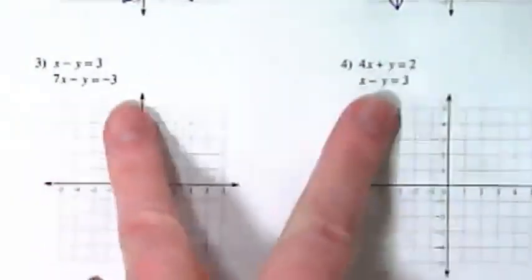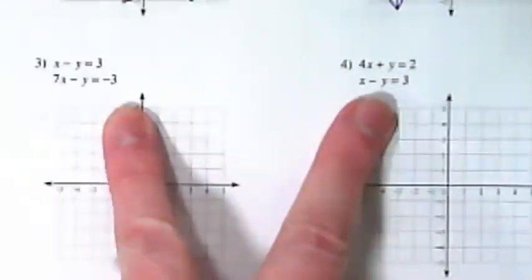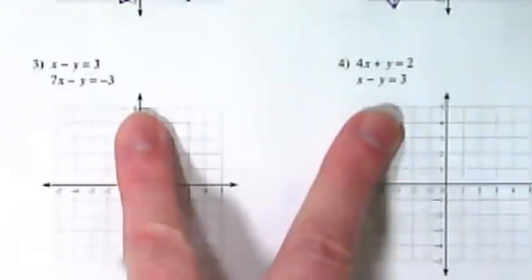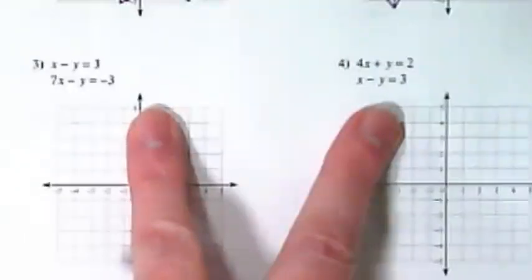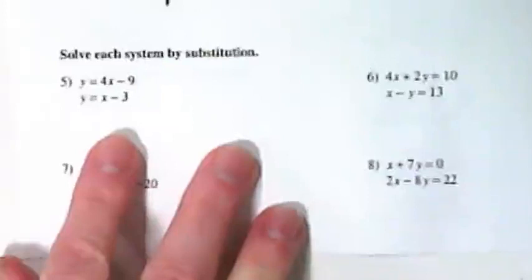When I look at 3 and 4, neither of these are in y equals mx plus b. They're in standard form. That doesn't mean it's necessarily easy to graph. So I'm going to hold off on those because I've got an activity tomorrow where we're going to learn to remind ourselves how to move things around in equations.